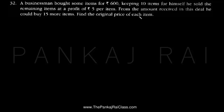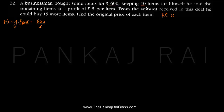We have to find the original price of each item. Let the original price of each item be rupees X. As he bought the items for 600 rupees and each item costs X rupees, the total number of items would be 600 divided by X. Out of these, he kept 10 items for himself, so the number of items sold is equal to 600/X minus 10.